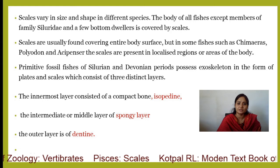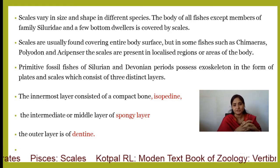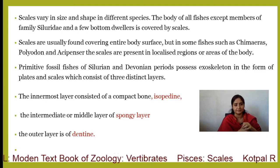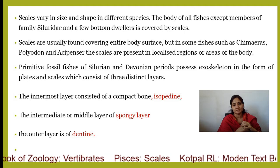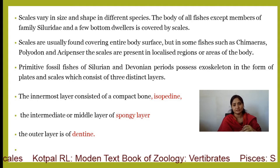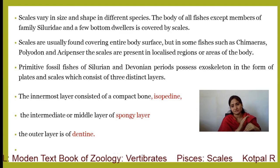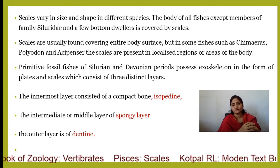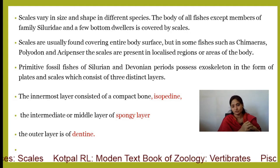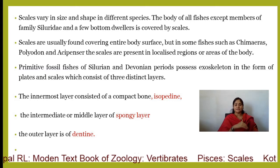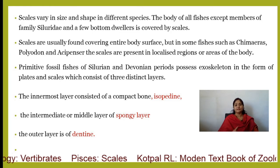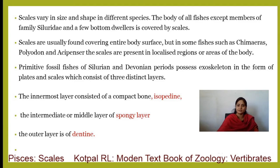Fish scales are usually found covering the entire body surface, but in some fishes such as Chimaeras, Polyodon, and certain pencil fishes, scales are found only in localized regions. Primitive fossil fishes of the Silurian and Devonian period possess exoskeleton in the form of plates and scales which consist of three distinct layers. In a standard pattern, each kind of scale has three layers present: the innermost layer is isopidine, the intermediate mid-spongy layer, and the outermost dentine layer.